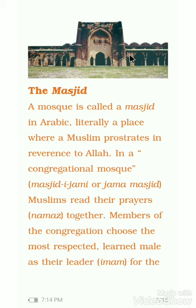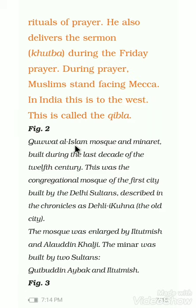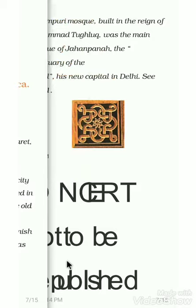As we discussed, many mosques were built during this period. A mosque — masjid in Arabic — is where Muslim people pray to God. The Quwwat-ul-Islam mosque was built by Qutbuddin Aibak, later enlarged by Iltutmish, and Alauddin Khalji added the Alai Darwaza. The Qutub Minar was built by two sultans: Qutbuddin Aibak and Iltutmish, and later repaired by Feroz Shah Tughlaq.